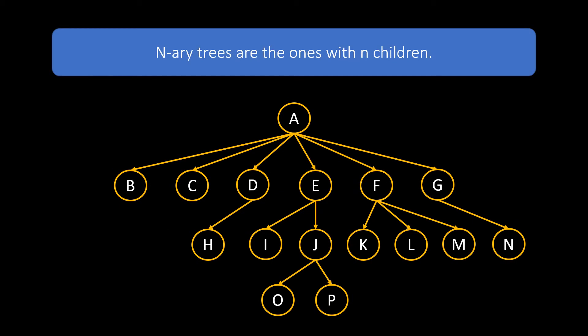N-ary trees are the ones with n children. In this example given below, we can see that some nodes do not abide to the rule of at most two children that a binary tree has, but they have more than two children. These are generic or n-ary trees.